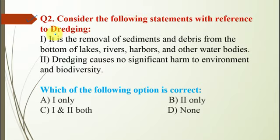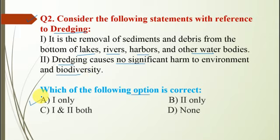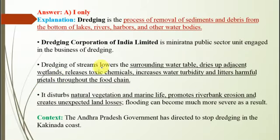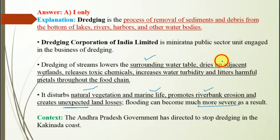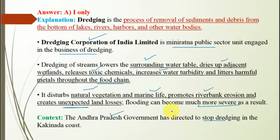Question number 2 is with reference to dredging. Statement 1: It is the removal of sediments and debris from the bottom of lakes, rivers, harbors and other water bodies. Statement 2: Dredging causes no significant harm to the environment and biodiversity. The correct option is A because Statement 2 is incorrect — dredging disturbs natural vegetation and marine life, promotes riverbank erosion, creates unexpected land loss, can make flooding more severe, lowers the surrounding water table, dries up adjacent wetlands, releases toxic chemicals, increases water turbidity, and spreads harmful metals throughout the food chain. The Dredging Corporation of India Limited is a Mini-Ratna public sector unit. The context is that the Andhra Pradesh government directed a stop to dredging on the Kakinada coast.